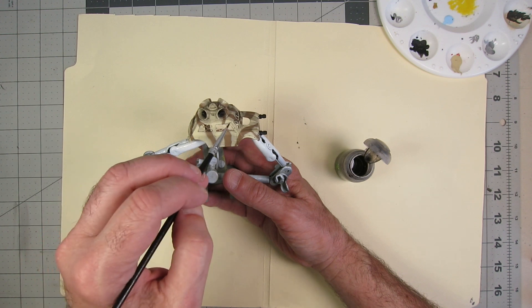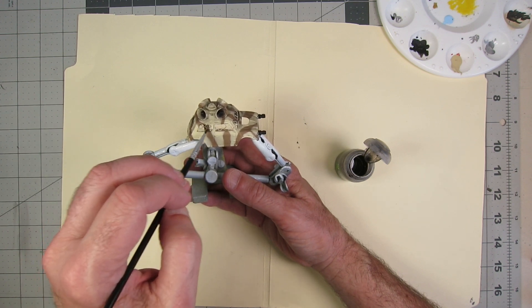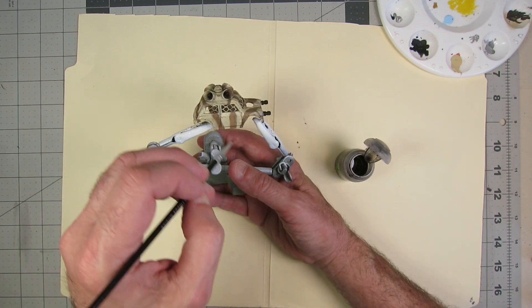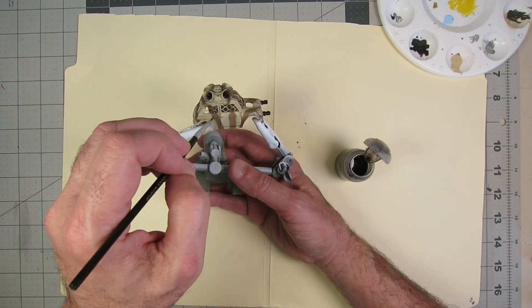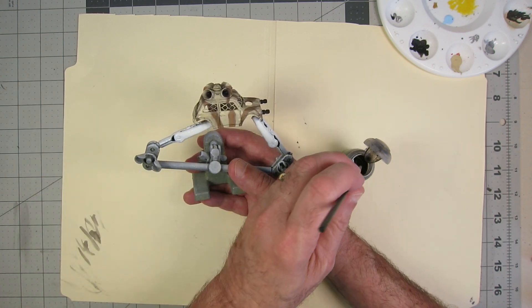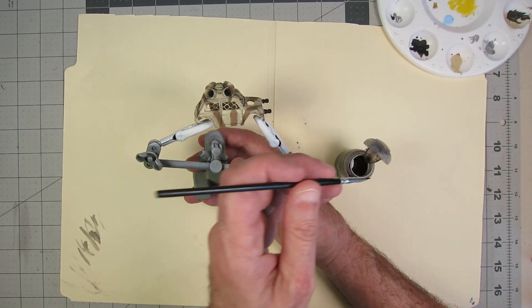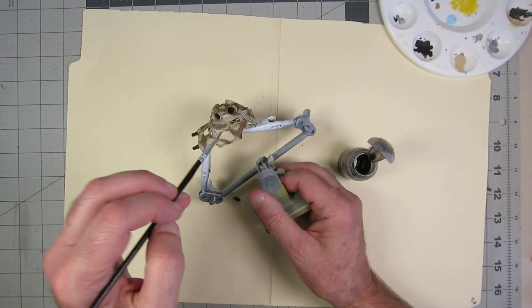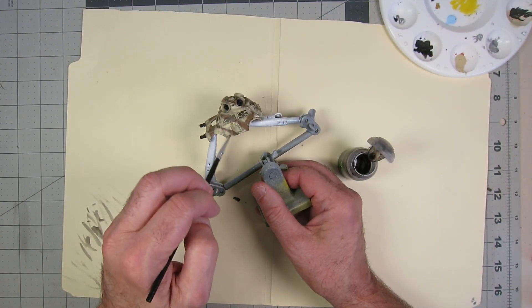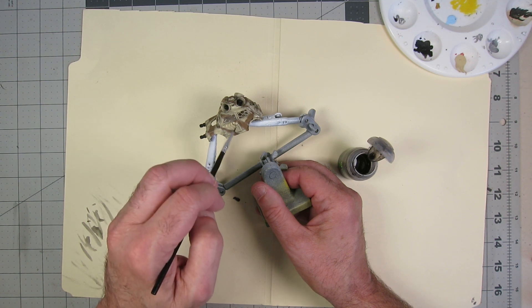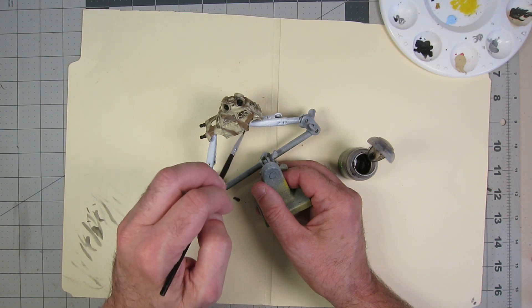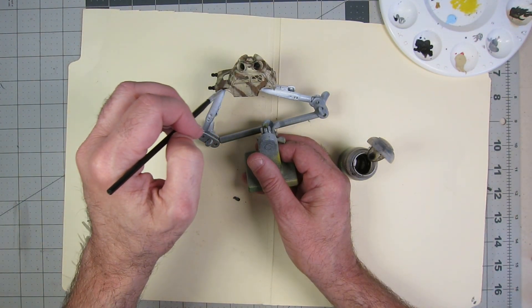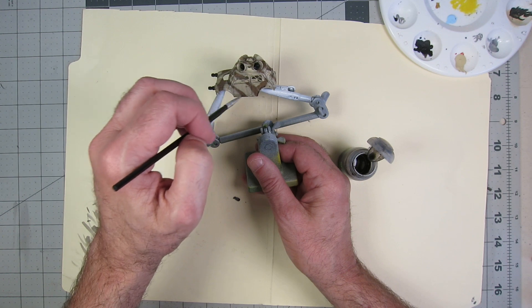After going over everything with the Nuln Oil, I do take silver paint, and I take silver paint and dry brush over the very center of those speaker horns very lightly. And same for the guns on the front. I take silver and dry brush those as well just to give them a little more detail. It's very subtle, but I like the results.